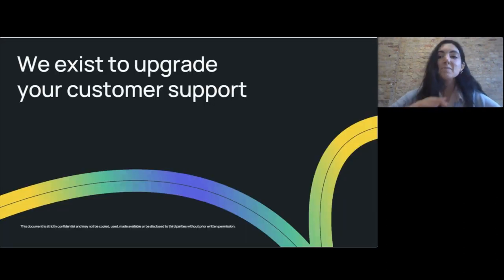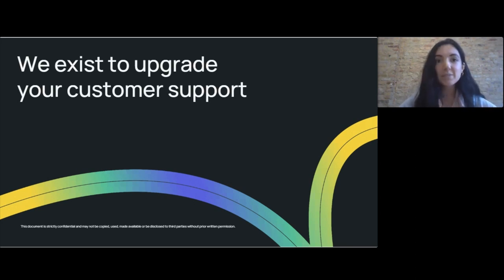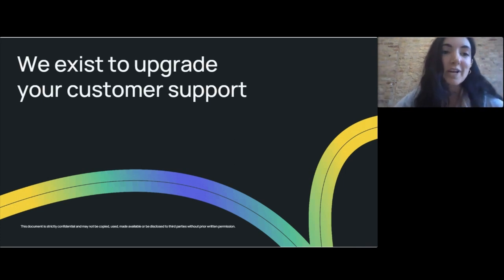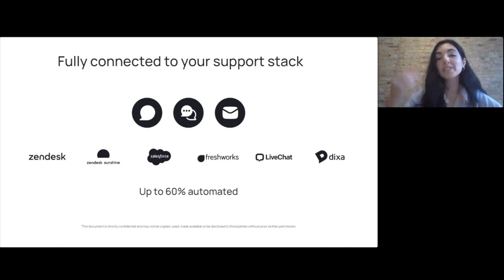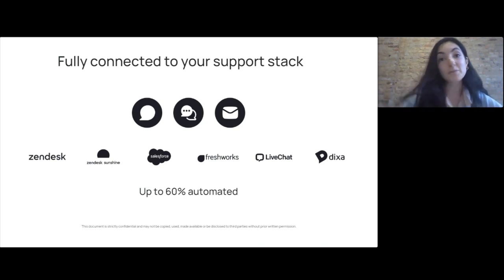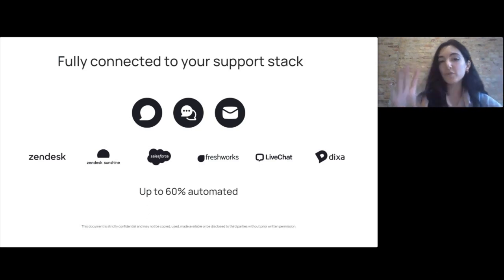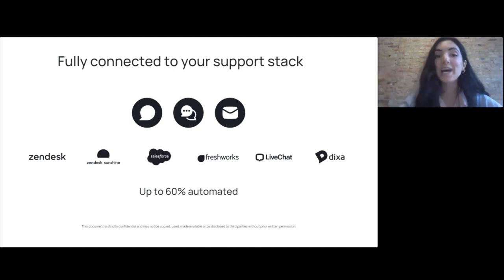Ultimate exists to upgrade your customer support. We fundamentally believe that AI and automation technologies do not need to be scary — they are there to work in harmony with humans and in the way that we all work and love to work today. They're there to make the work much more joyful for support teams and the experience much more joyful for customers. We're a real virtual agent — a user in all of these incredible CRM platforms that we partner with. We exist on every single digital support channel: chat, messaging, social media, email, ticketing — working seamlessly and harmoniously across every platform.